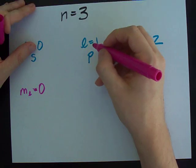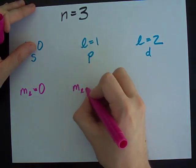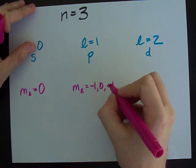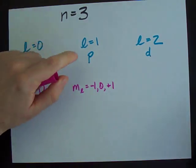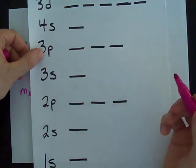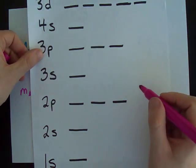When L equals one, ML could end up being minus one, or zero, or plus one. So, each P orbital has three dashes on which you can put two electrons each.